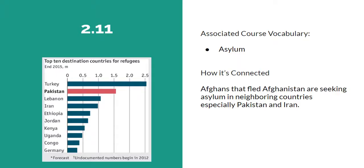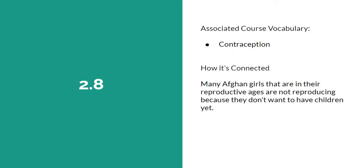Topic 2.11. The associated course vocabulary is asylum. How this is connected is that many Afghans who fled Afghanistan are seeking asylum in neighbouring countries, especially Pakistan and Iran. Other countries that they are seeking asylum in are Turkey, Lebanon, Ethiopia, Jordan, Kenya, Uganda, Congo, and Germany.